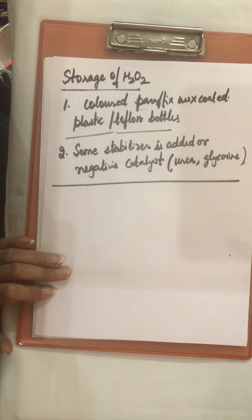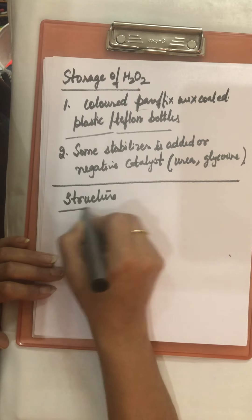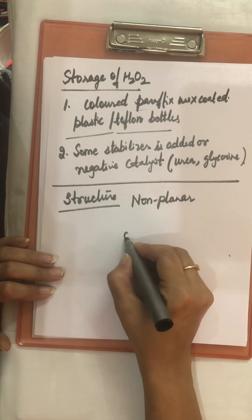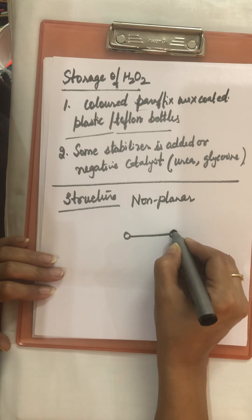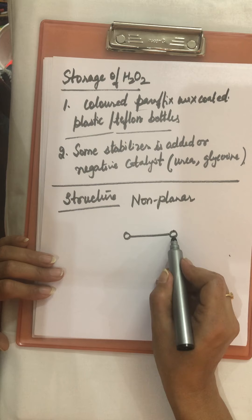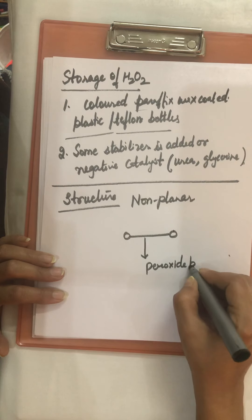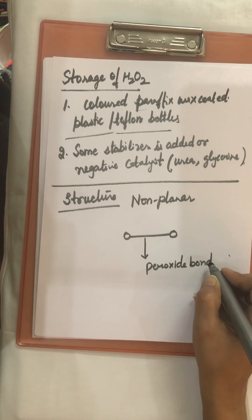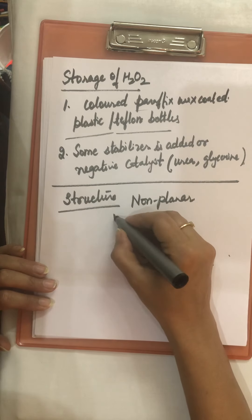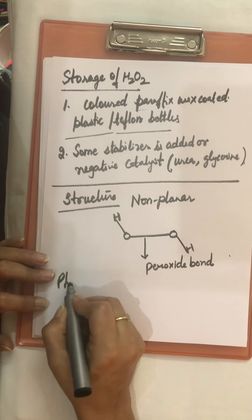The structure of H₂O₂ is non-planar. There are two oxygen atoms linked to each other by a single covalent bond, called the peroxide bond. The two O-H bonds are in different planes, giving H₂O₂ its non-planar, open-book structure.